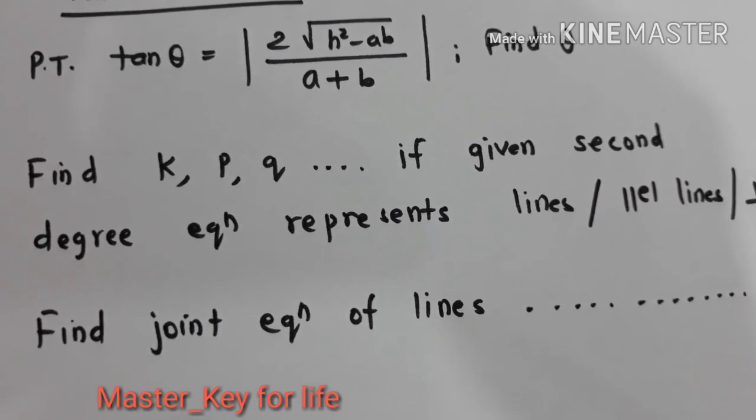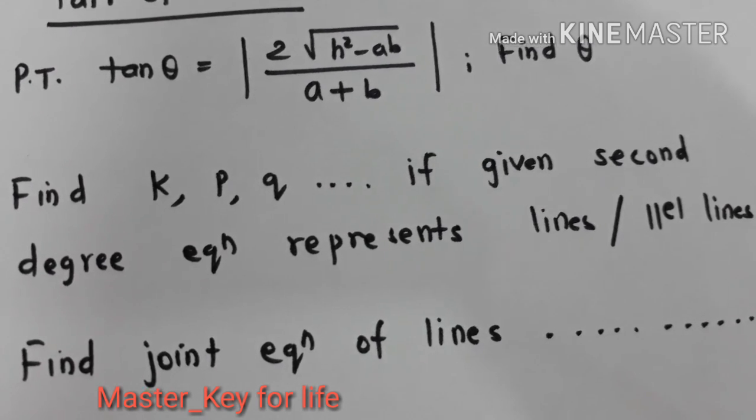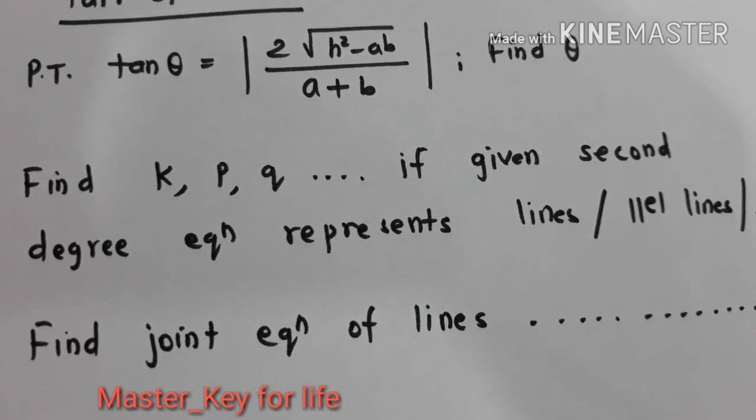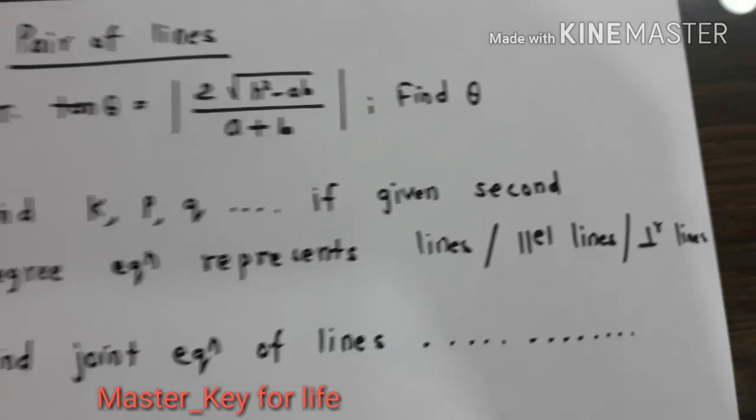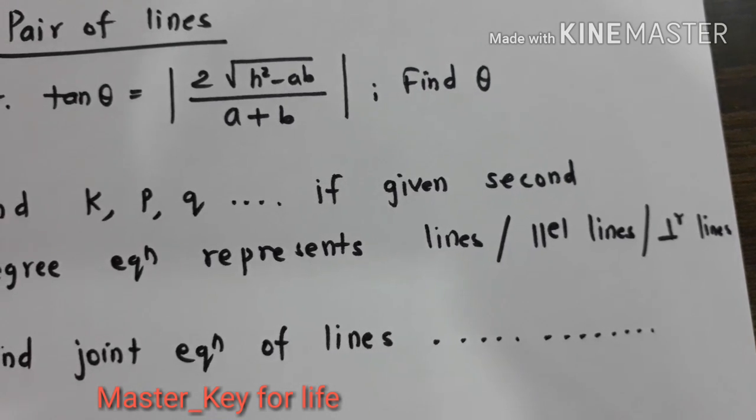This is the most favorite problem from pair of lines where they ask you to find some unknown, for example K, P, Q, right? And if the given second degree equation represents either lines or parallel lines or perpendicular lines.